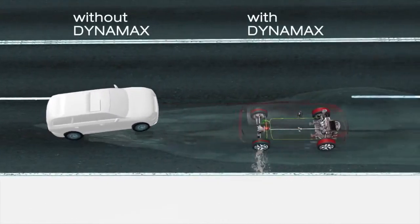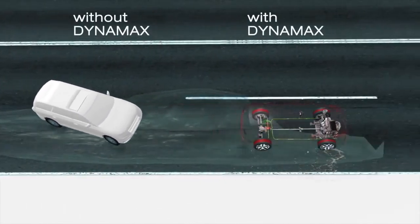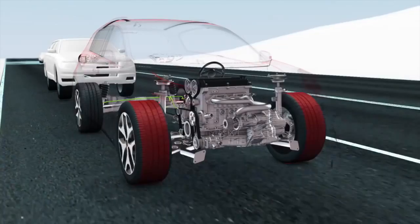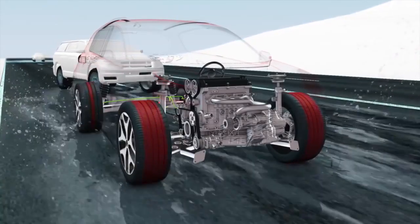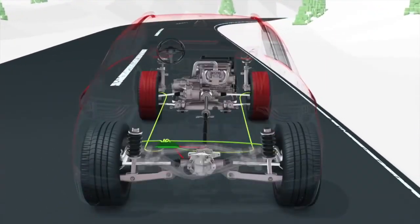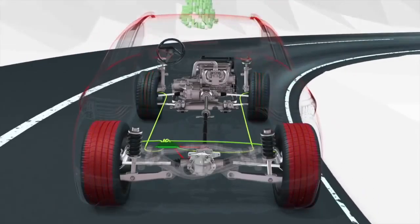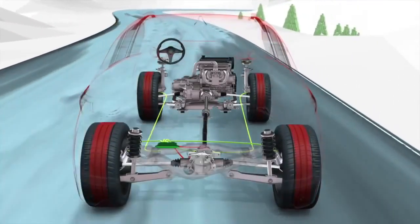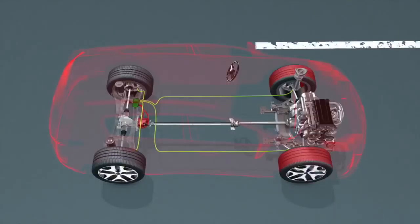Dynamax continuously monitors driving conditions and anticipates AWD system requirements compared to other AWD systems which can only react to conditions after they occur. Dynamax makes sure that your drivetrain is always a decisive step ahead of the rest of the vehicle.